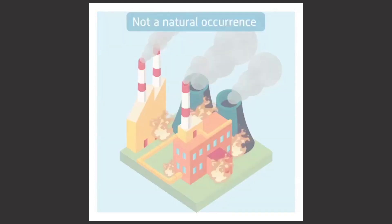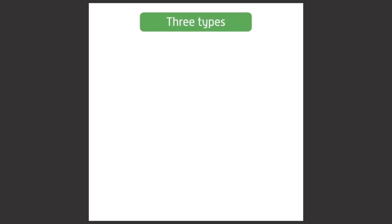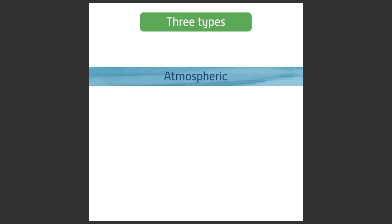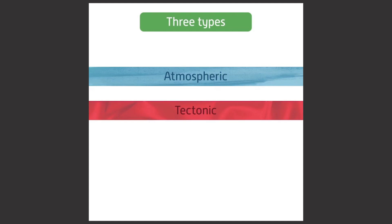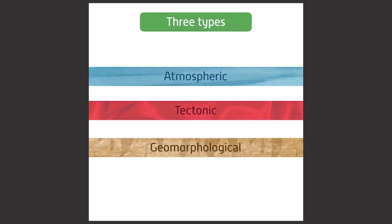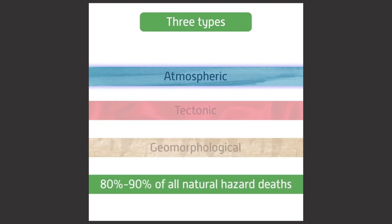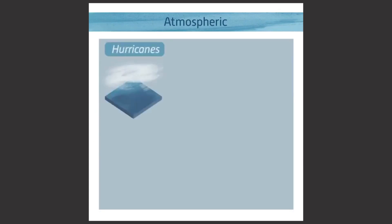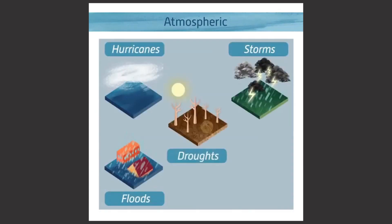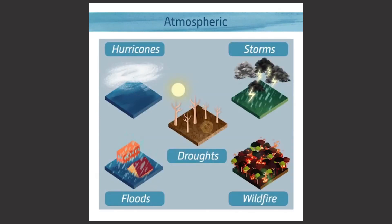Hazards can be grouped into three types: atmospheric, tectonic, and geomorphological. 80–90% of all natural hazard deaths are caused by atmospheric hazards. This is weather-related and includes hurricanes, storms, floods, droughts, and wildfire.